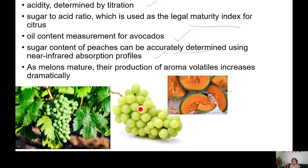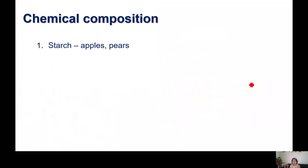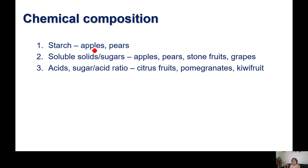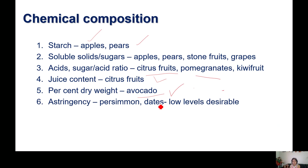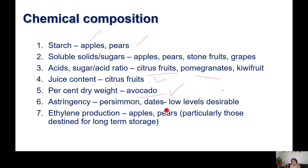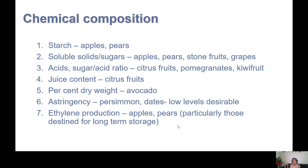Grapes change from green to yellow with increased sugar content and decreased acidity. For melons, color changes, sugar content changes, lycopene content changes, and orange sugar-to-acid content changes. For many fruits like apples and pears, starch content decreases; soluble solids and sugar content change for apples, pears, stone fruits, and grapes; sugar-to-acid ratio changes for citrus, pomegranate, and kiwi; juice content for citrus changes from immature to mature state; percent dry weight changes for avocado due to fat content; astringency decreases in persimmon, amur fruit, and dates as tannin content decreases; and ethylene production is relevant for apples and pears, particularly those destined for long-term storage.